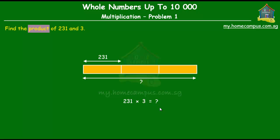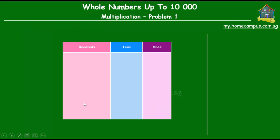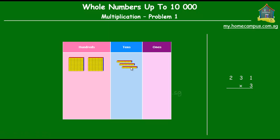Now we know what product means — it means to multiply. To carry out the multiplication, we'll use the visual steps in our place value chart in the middle of the screen, and on the right side we'll do the working. We have to do 231 times 3. Placing 231 in the place value chart: two hundreds, three tens, and one ones. We multiply each of the ones, tens, and hundreds by 3.